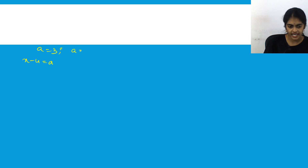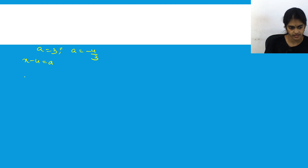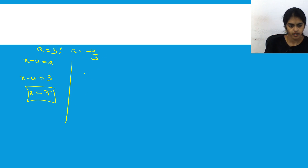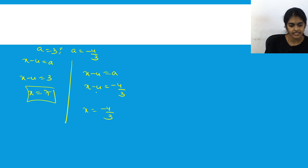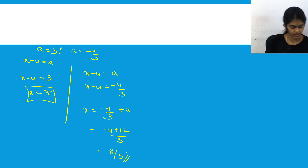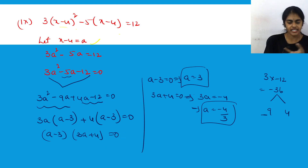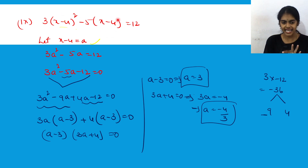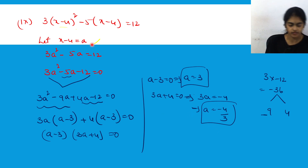Now substitute back since a = x - 4. If a = 3, then x - 4 = 3, so x = 7. If a = -4/3, then x - 4 = -4/3, so x = -4/3 + 4 = (-4 + 12)/3 = 8/3. So the roots are x = 7 and x = 8/3. Whenever you see (x - 4)² and (x - 4), take the entire repeated expression as a substitution variable.